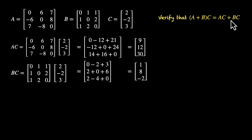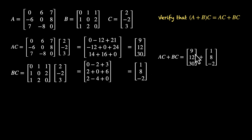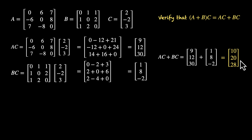Now let's find the right-hand side: AC plus BC. That's [9, 12, 30] plus [1, 8, −2]. 9 + 1 = 10, 12 + 8 = 20, 30 − 2 = 28. So the right-hand side is [10, 20, 28].